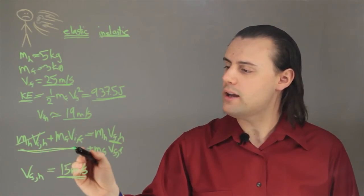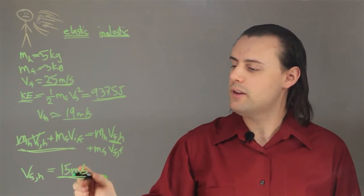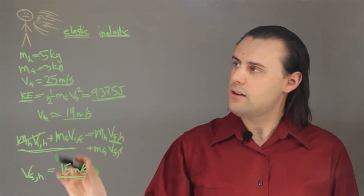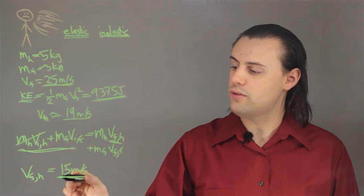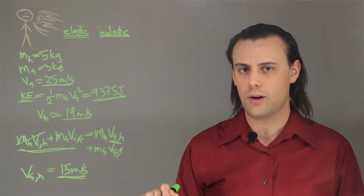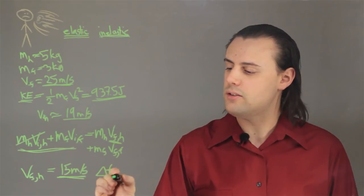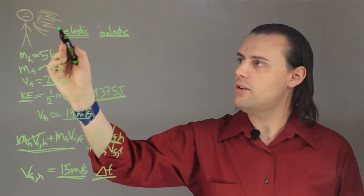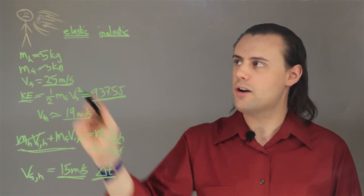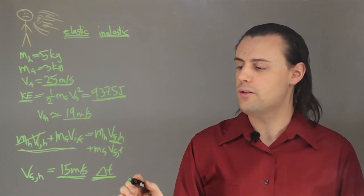If the change in velocity of the head goes from zero to 15 meters per second in a short amount of time, then this is a very large acceleration. If the amount of time, delta t, is short enough, then this energy, this amount of momentum transferred to the head, would be enough to knock this person out. Or, if it's a very small amount of time, possibly kill them.